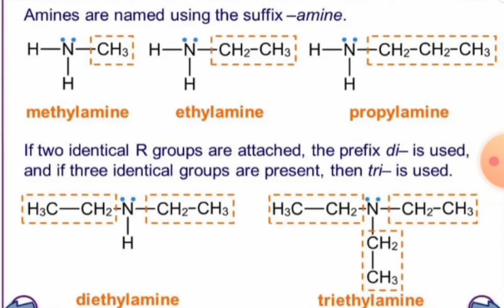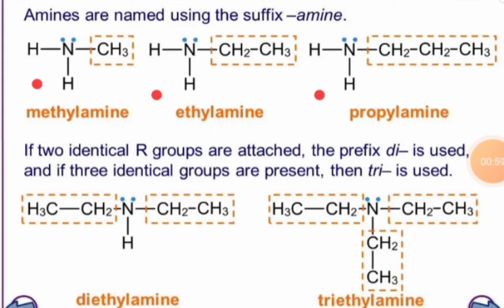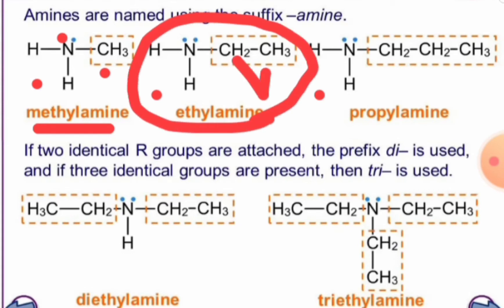Now let us see the nomenclature of amines. You can see three structures of primary amines based on the R group present. When a CH3 methyl group is present on the nitrogen atom of the amine, it is given as methylamine. In the second structure, there is one ethyl group C2H5, so the name is ethylamine. With a three-carbon hydrocarbon chain on the nitrogen, it is called propylamine. All three — methylamine, ethylamine, and propylamine — are primary amines because there is only one R group linked to the nitrogen.